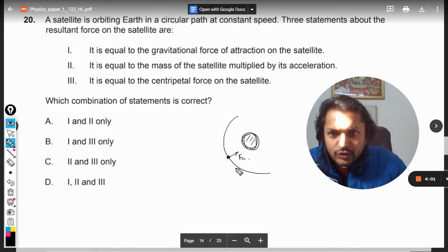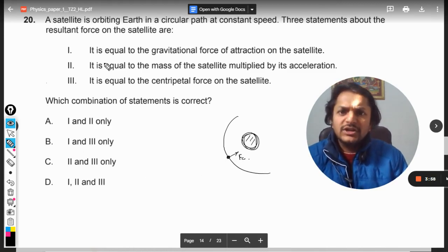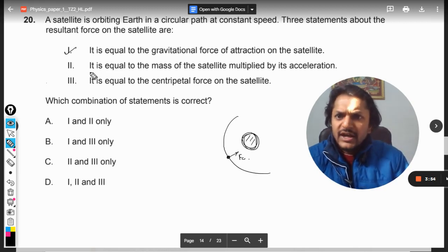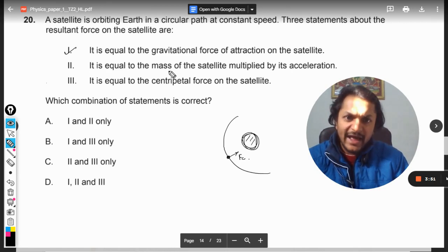Otherwise it cannot move in a circular orbit. So this is the centripetal force now. So what is the first statement? It is equal to the gravitational force of attraction on the satellite. Well yes, of course it is equal to the mass of the satellite multiplied by its acceleration.